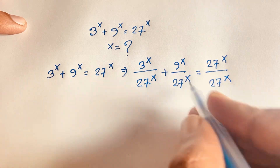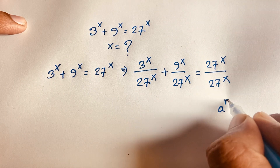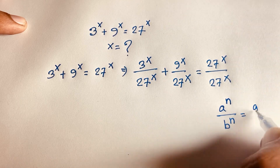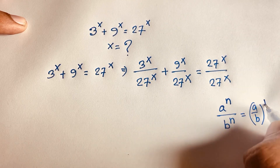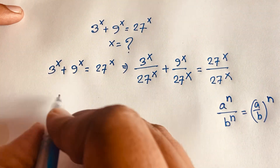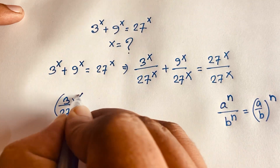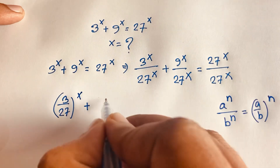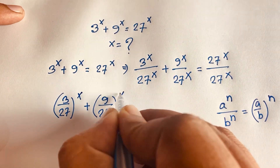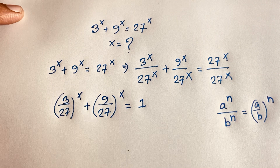We know the exponent rule: a over b, to the power n, equals (a/b) to the power n. According to this law, this expression becomes (3/27) to the power x plus (9/27) to the power x is equal to 1. That division on the right side equals 1.